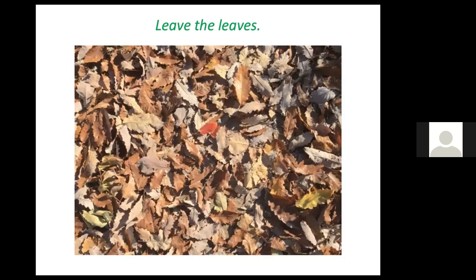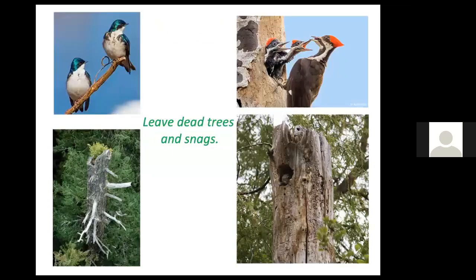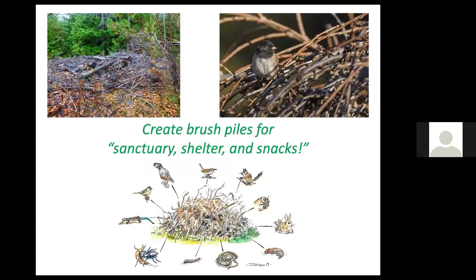Caterpillars drop from the canopy at the end of their caterpillar cycle and need safe, protected places to make it through winter. Leaf litter or other natural vegetation is appropriate; grass or bare ground offers no protection and they'll be easy pickings. Try to have as much natural vegetation or leaf cover as possible on your property. Dead trees are also valuable for wildlife including birds — if you can leave them standing without creating a hazard. Create brush piles for birds and other animals — they offer sanctuary, shelter, and snacks: the three S's.